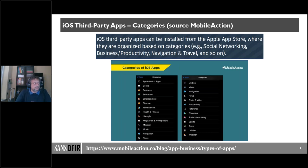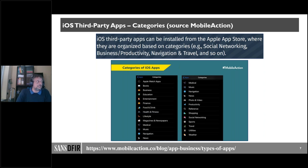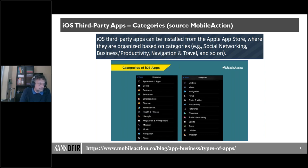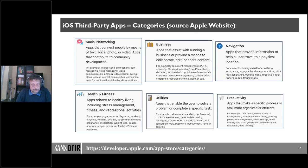This poster guides you on how and where you can find the most interesting artifacts for the most commonly used third-party apps worldwide. iOS third-party apps can be installed from the Apple App Store, unless you have a jailbroken device or want to install an app with a developer certificate. In the Apple App Store, applications are organized based on categories already defined by Apple: social networking, business, productivity, navigation, news, reference, shopping, food and drink, health and fitness, and so on. A complete list is available on developer.apple.com.